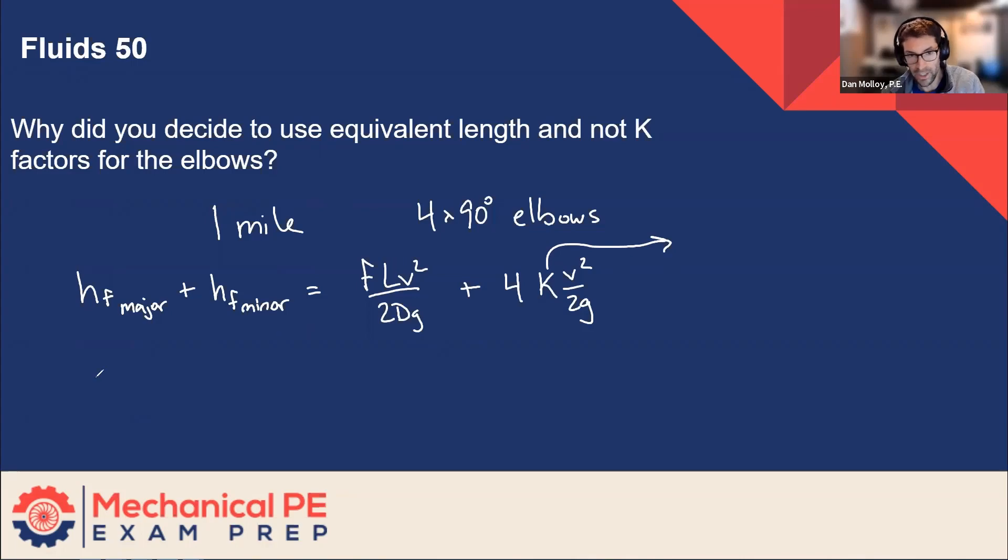The alternate approach from the old way is we don't necessarily distinguish the major losses from the minor losses. And we still have the option to use Darcy or the steel pipe friction table. If we're going to use Darcy we're going to do fLv² over 2Dg.